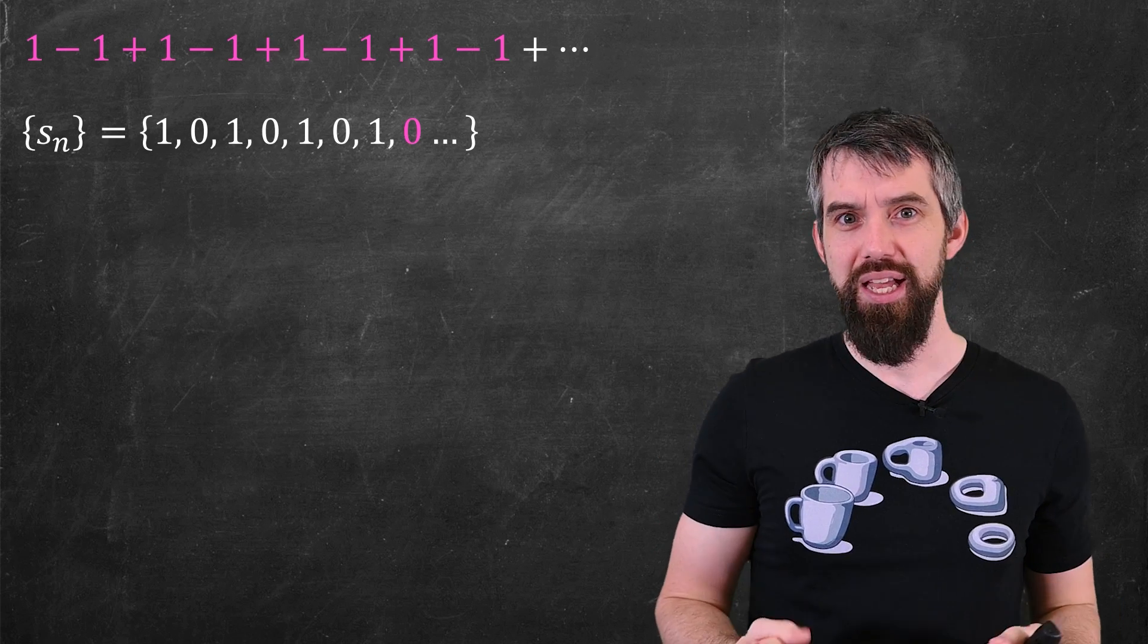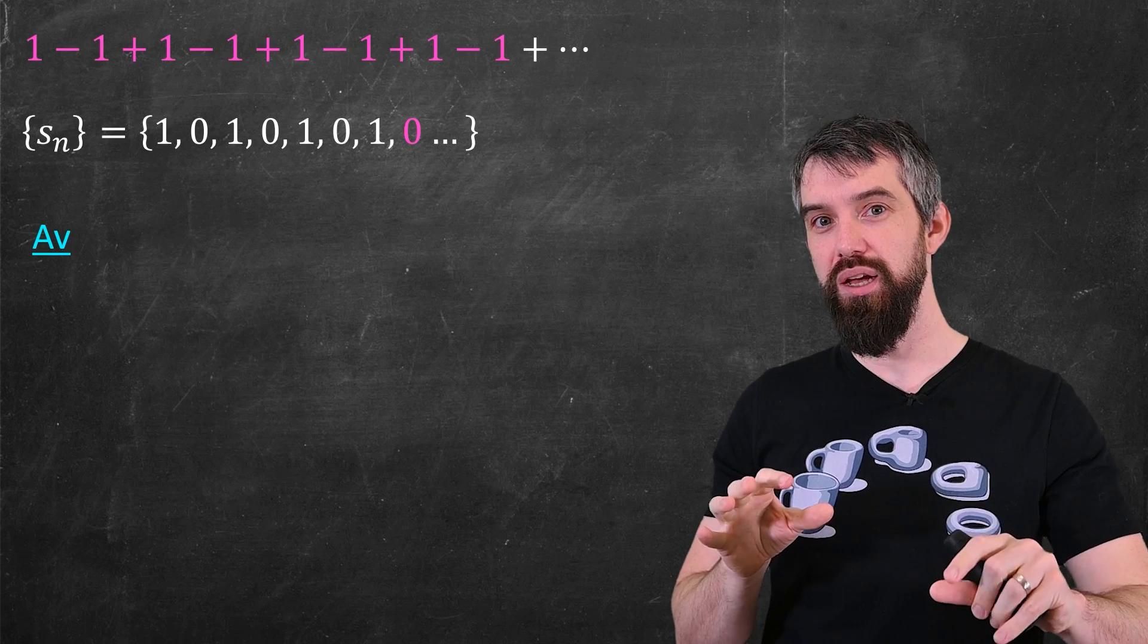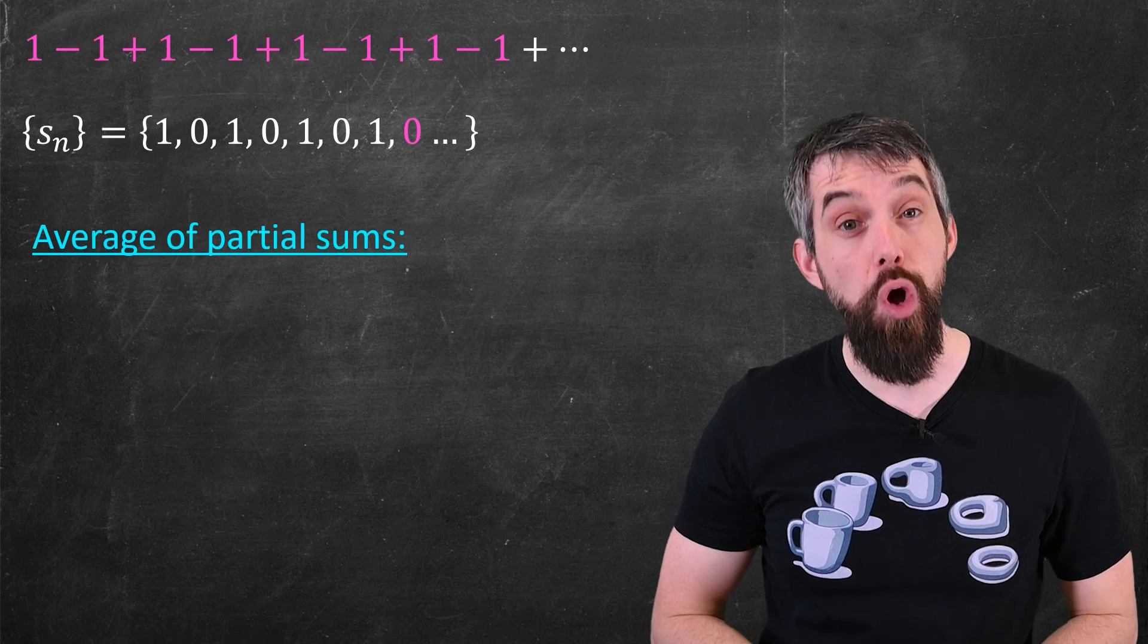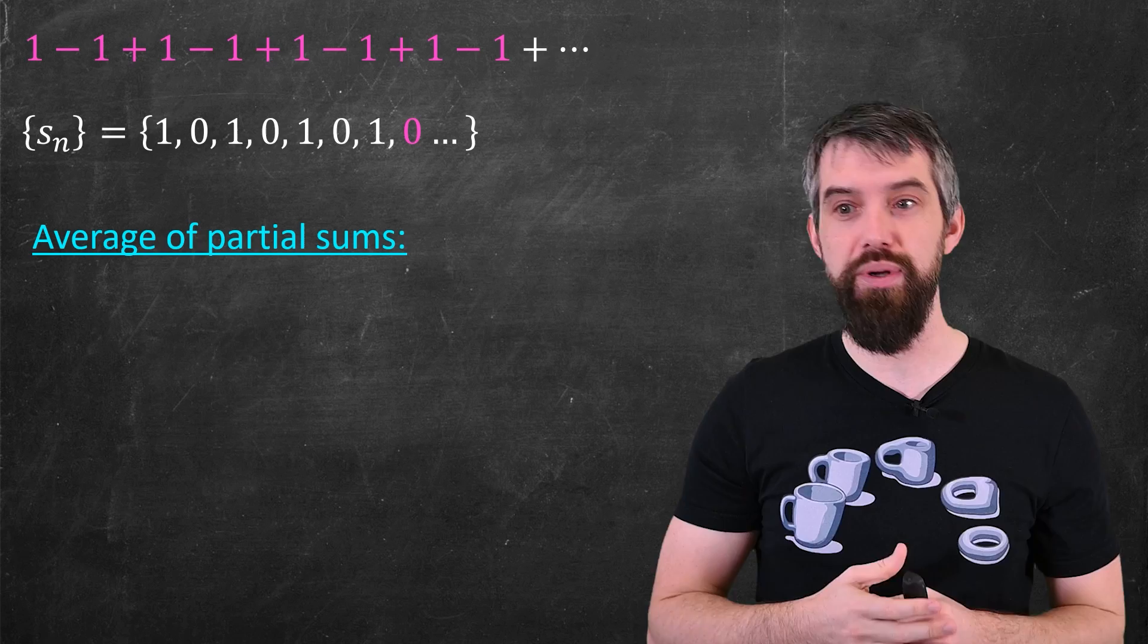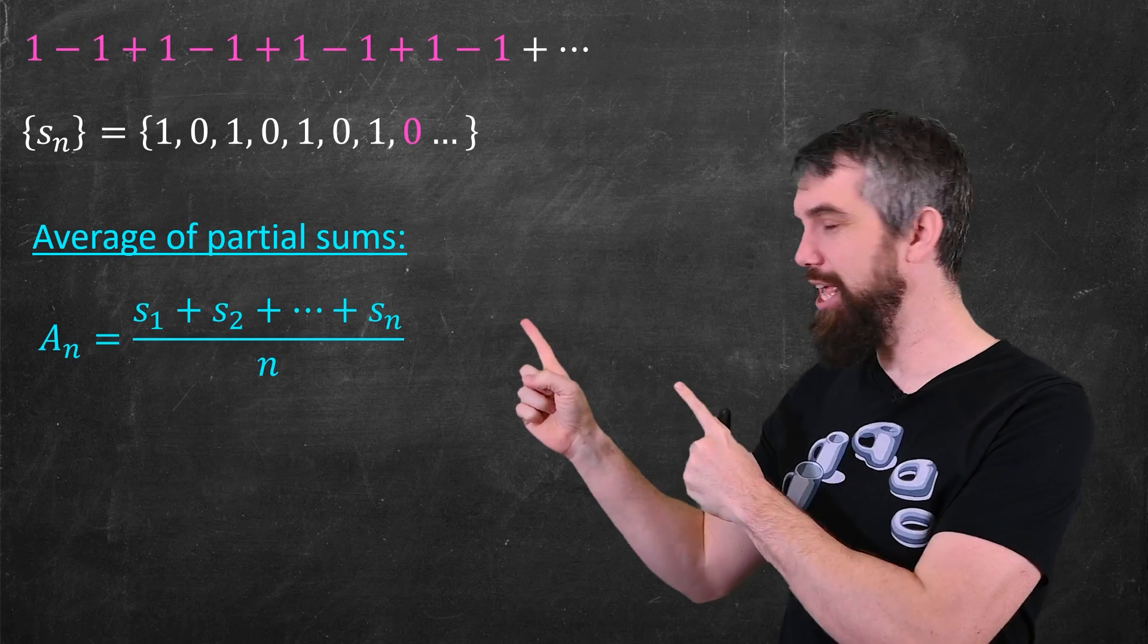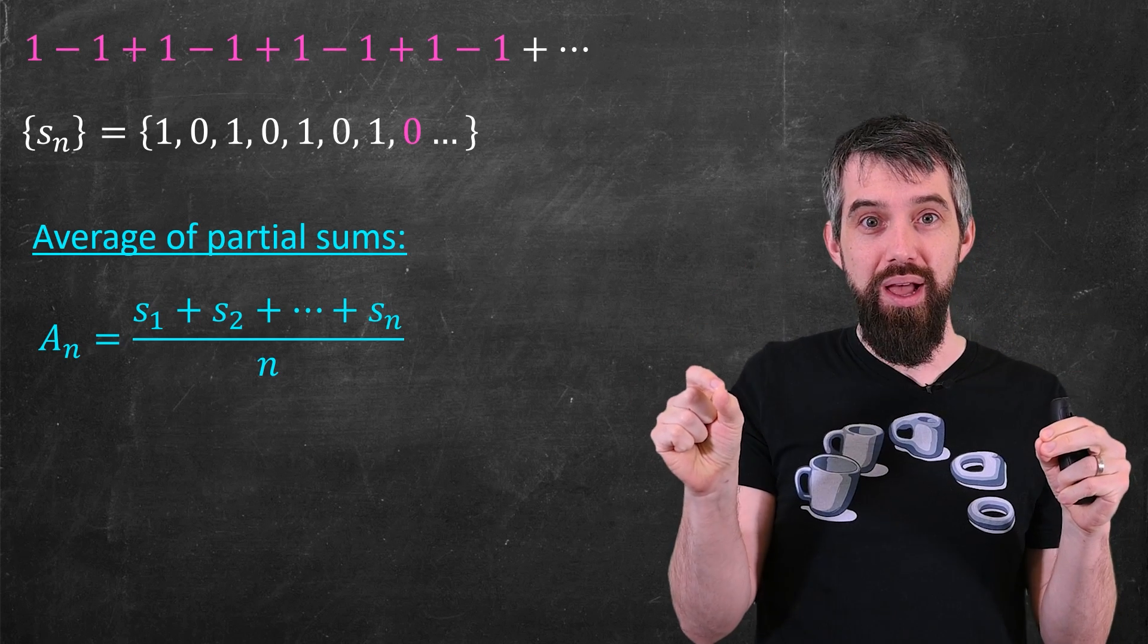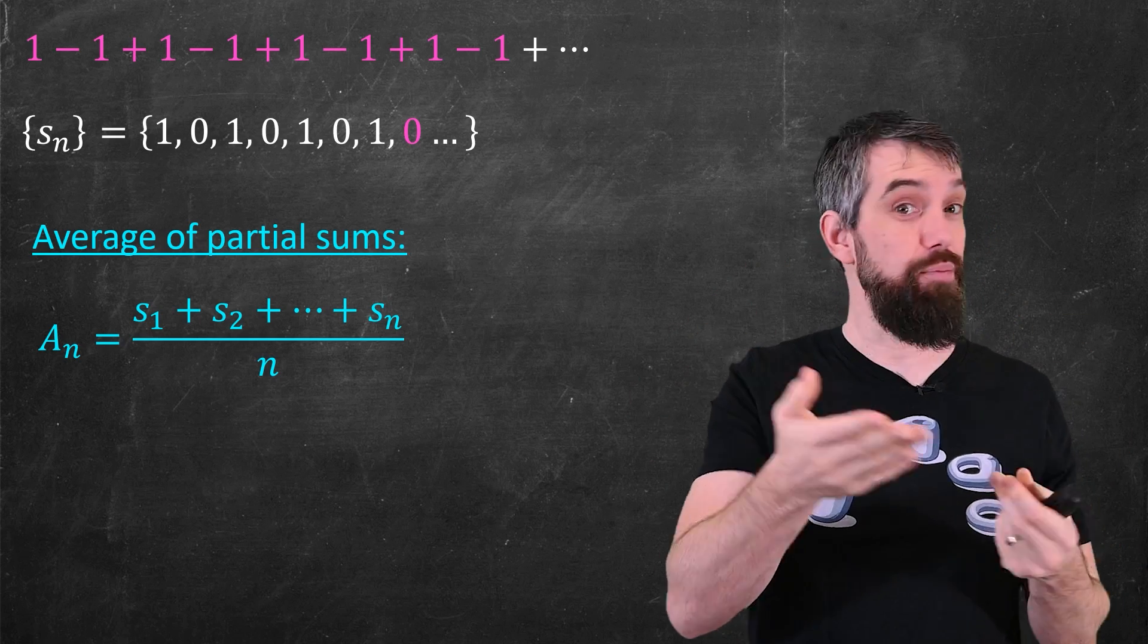And the idea is, you start with your original series, you then make your sequence of partial sums. What if I take the average of those? I'll create this new sequence, which I will call capital A_n now, for average here. And if I take all of my partial sums, the first n of them, I add them together and divide by n, which is just taking the average.